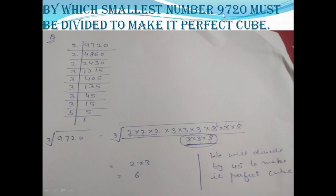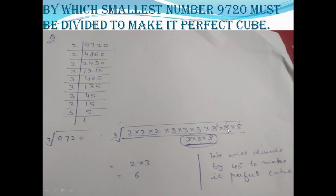Next question: by which smallest number must 9720 be divided to make it a perfect cube? First of all, find the prime factors of 9720. Write all the prime factors in cube root, then start making pairs of three same digits. The first group is 2 × 2 × 2, and the next group is 3 × 3 × 3. We are left with 3 × 3 × 5, which cannot make a group of three same digits.